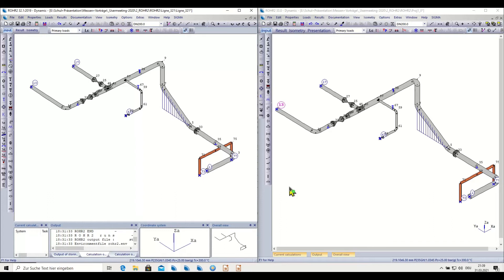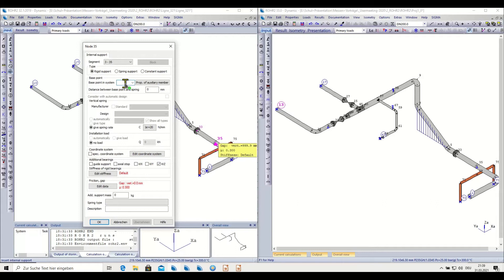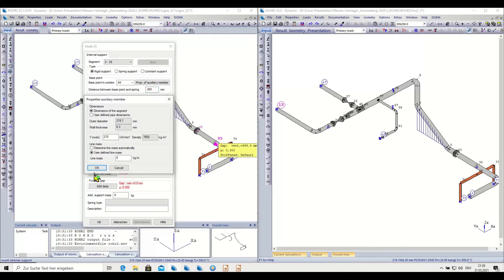And now let's assume we want to change this external hanger and connect it here to the structural steel. In 32.1 version, we would use the internal support symbol, click on node 35, specify the attachment point as 69, give some distance to where the slide position is, press OK, and maybe specify the auxiliary member here.